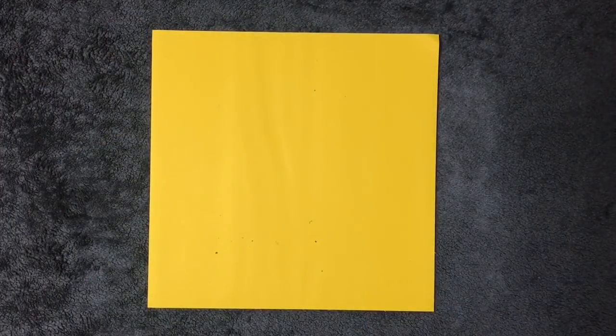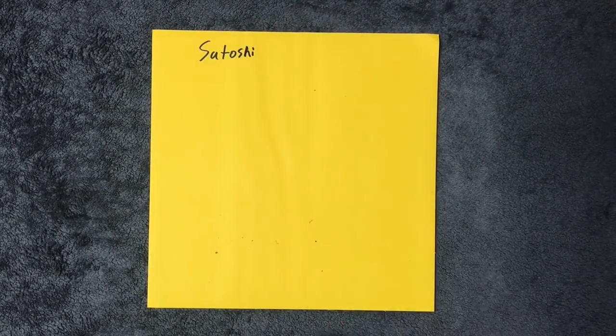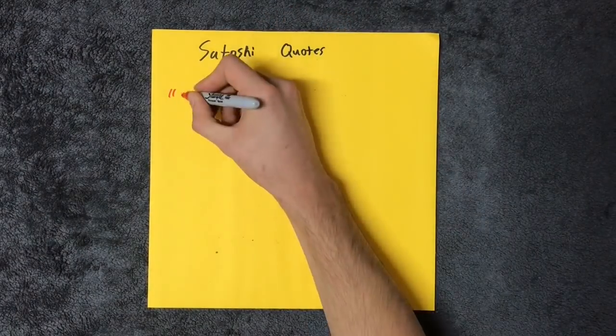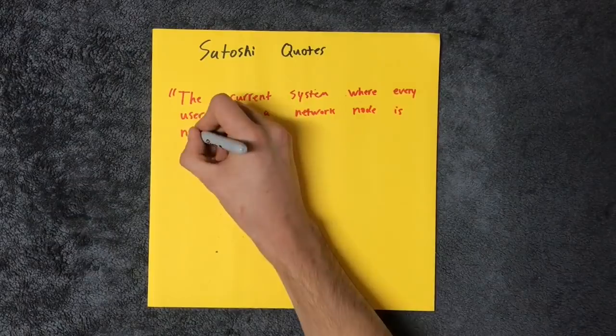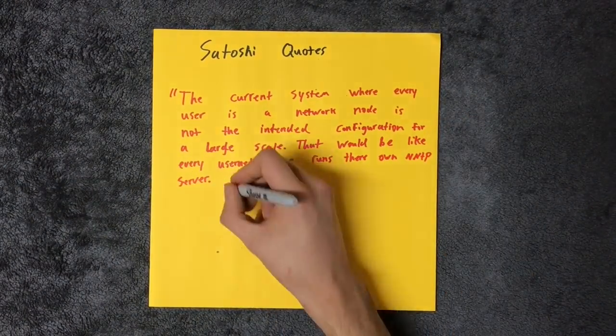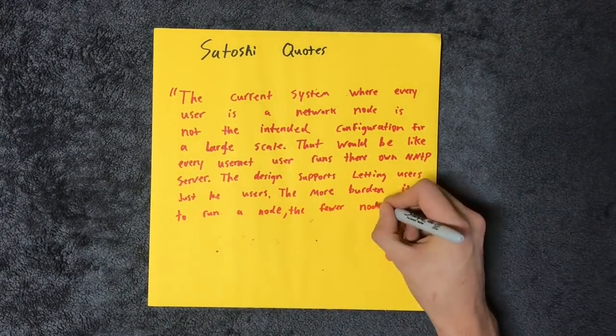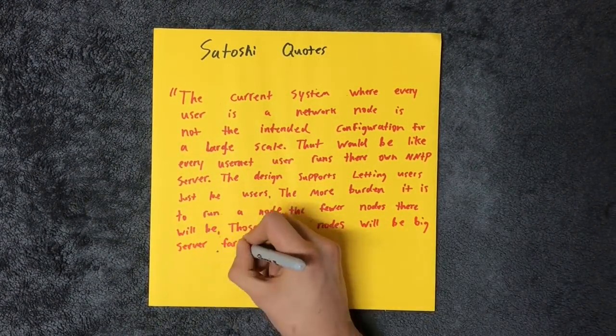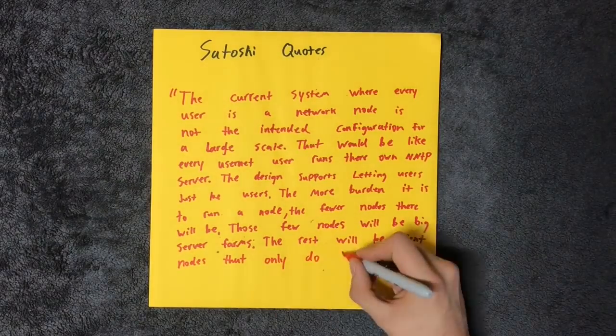Let's look at some of the quotes from Satoshi Nakamoto, the creator of Bitcoin himself. The current system where every user is a network node is not the intended configuration for a large scale. That would be like every usernet user runs their own NNTP server. The design supports letting users just be users.